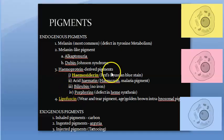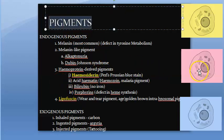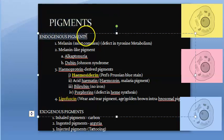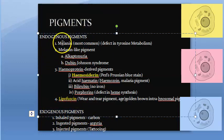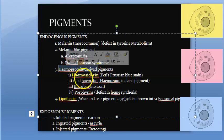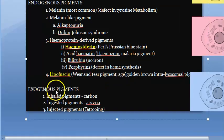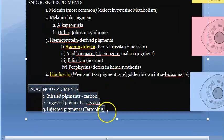In this video we want to look at pigments — these are colored substances that can be present in us. These colored substances can be either endogenous, meaning we produce them, or exogenous, meaning they come from outside. We produce melanin, hemosiderin, bilirubin — all of this you already know.